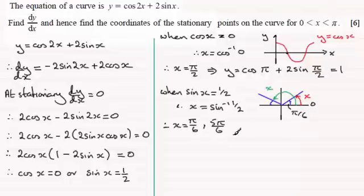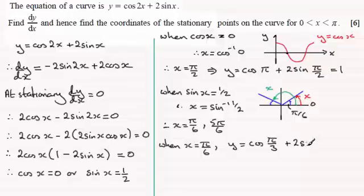We need to just get the corresponding y values. So if we just say here, when x equals π upon 6, substituting π upon 6 into here for y, we get y equals the cosine of π upon 3, remember we double π upon 6, and then we've got 2 times the sine of π upon 6.